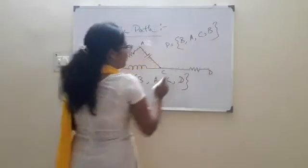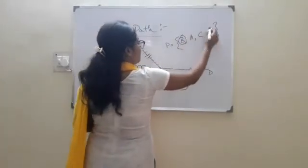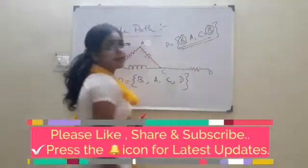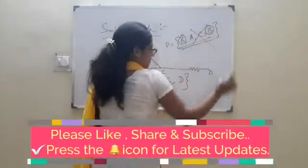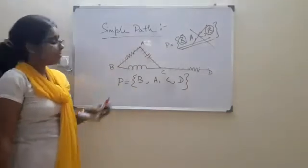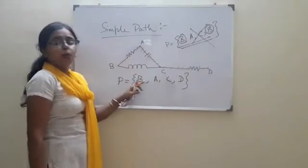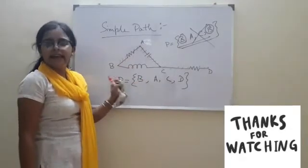That means here the node B is repeating. That means this is not a simple path. Simple path will be the path where any node will not repeat again.